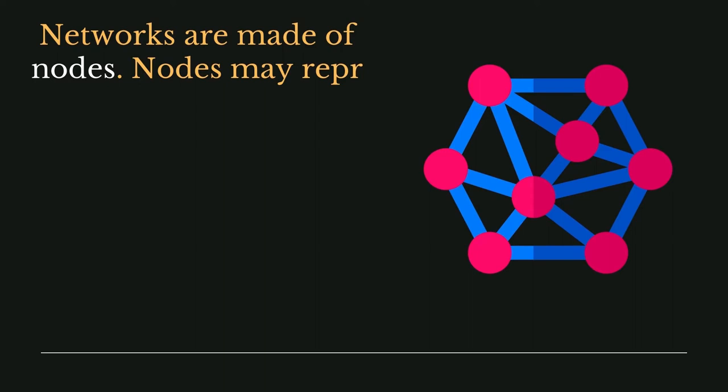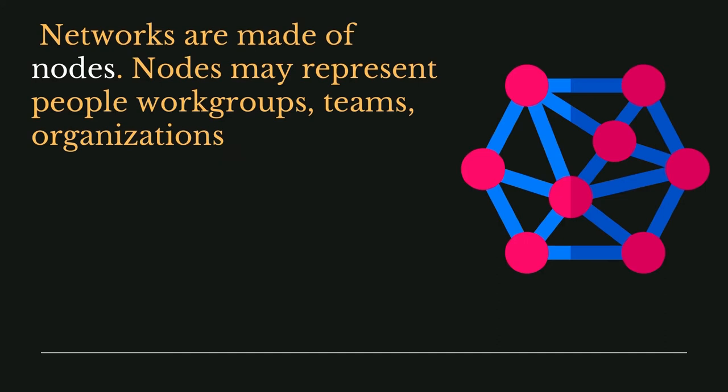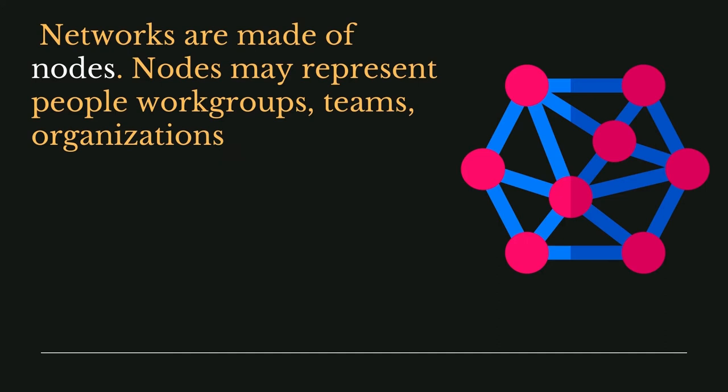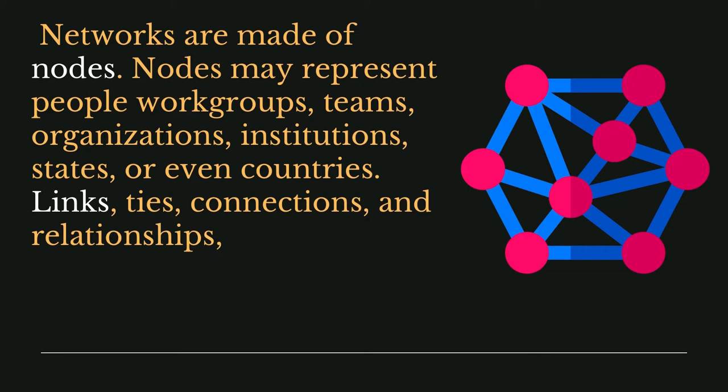Basically, all networks are made of nodes and links. Nodes may represent people, workgroups, organizations, institutions, states, web pages, or even countries. Links are basically ties, connections, and relationships which connect two nodes together.